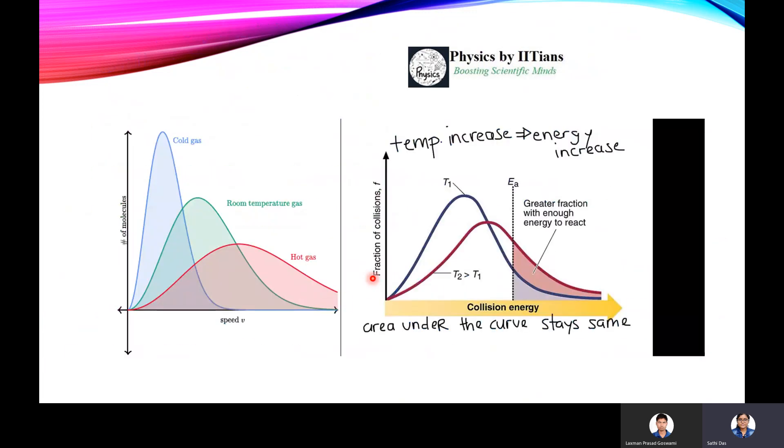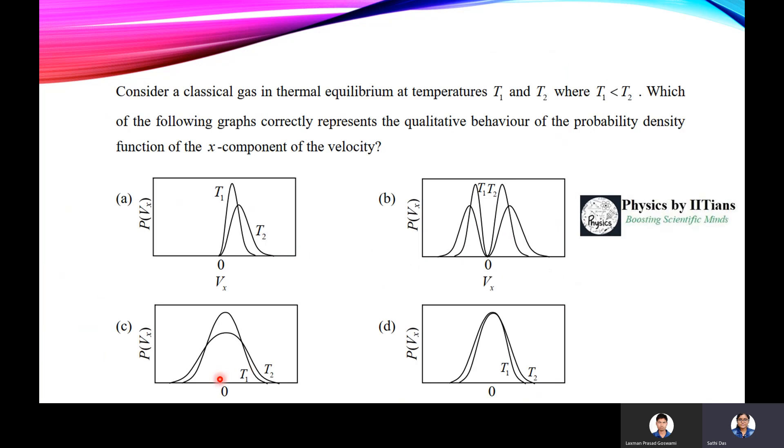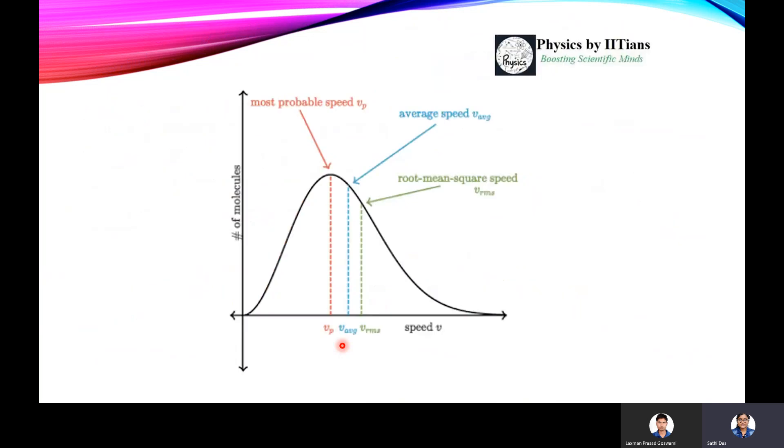So what is the answer? The answer is C. Another kind of question: find out the graph or the distribution for the most probable velocity, average speed, and the rms speed. That is vrms, vp, or v average. Then these are the curve: this is vp, this is the most probable speed, this is average speed, this is rms speed. And this is just for you to remember.